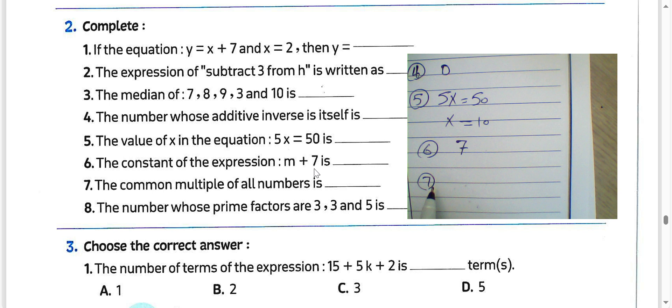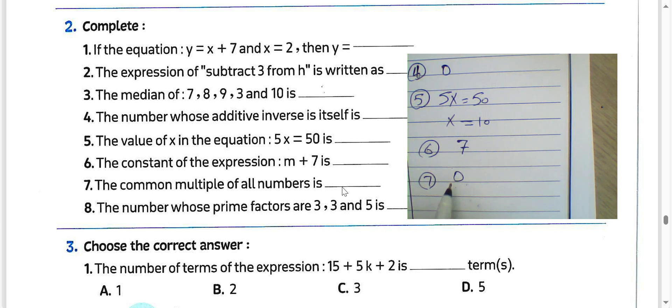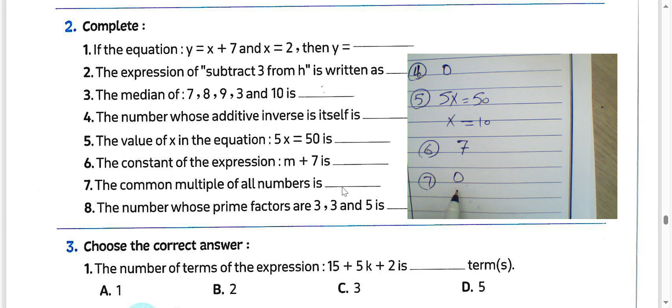Question 7: the common multiple of all numbers is 0, because 0 can be divided by all numbers — divided by all numbers without itself.